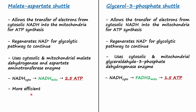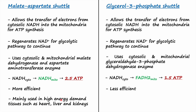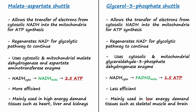The malate-aspartate shuttle is more efficient because it synthesizes 2.5 molecules of ATP, whereas the glycerol-3-phosphate shuttle is less efficient because it synthesizes fewer molecules of ATP. The malate-aspartate shuttle is mainly used in high energy demand tissues such as heart, liver, and kidneys, whereas the glycerol-3-phosphate shuttle is used in lower energy demand tissues such as skeletal muscle and brain.